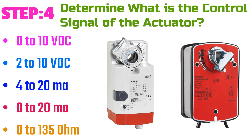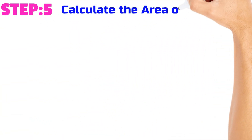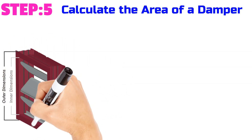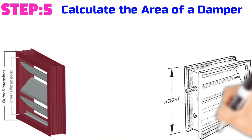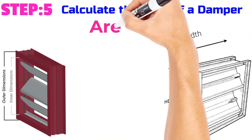Step number five: Calculate the area of the damper. Area equals width multiplied by height. Area can be in square meters or square feet.